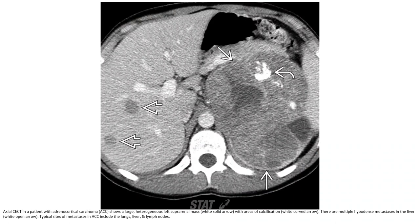Contrast-enhanced CT in a patient with adrenocortical carcinoma showing a large heterogeneous left suprarenal mass with areas of calcification. There are multiple hypodense metastases in the liver. Typical sites of metastasis in ACC include the lung, liver, and lymph nodes.